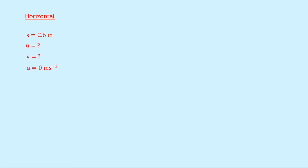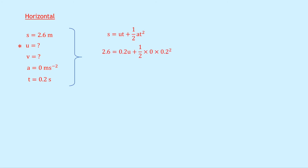For the horizontal component using suvat: s is 2.6 meters; u is unknown; a is 0 meters per second squared; t is 0.2 seconds. Using s equals ut plus a half at squared: 2.6 equals 0.2u plus a half times 0 times 0.2 squared. The second term disappears, so 0.2u equals 2.6, giving u_h equals 13 meters per second.